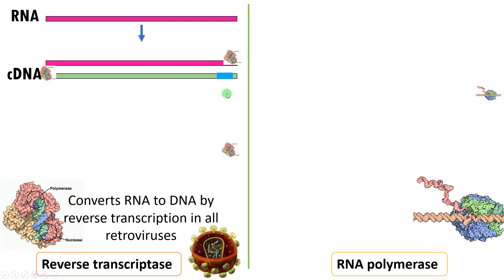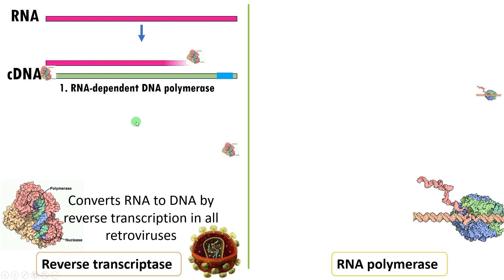It requires a primer for its activity. The first activity is that it is an RNA-dependent DNA polymerase. From the RNA-DNA hybrid, the RNA is removed by the same enzyme through its ribonuclease activity, or RNase activity.